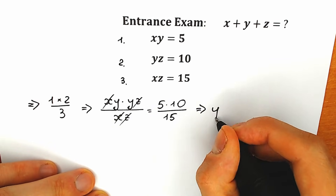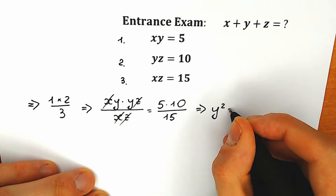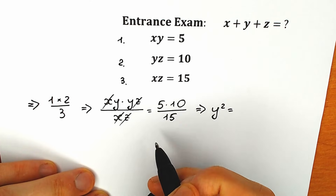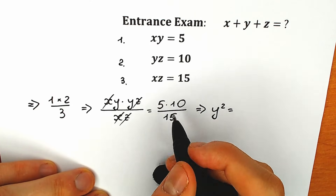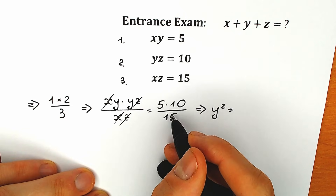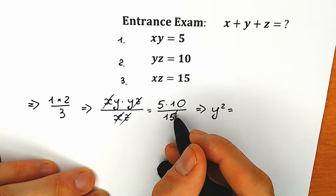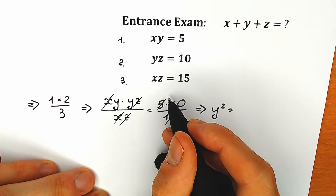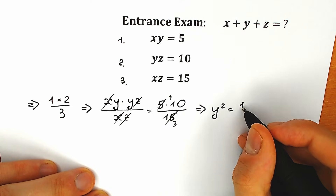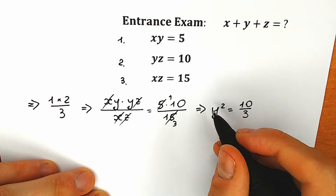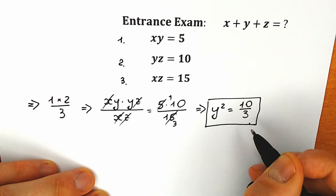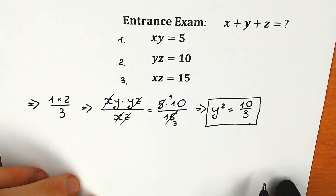So from here we have y squared equal to 5 times 10 over 15. We can cancel by 5, giving 10 over 3. So y squared equals 10/3. This is extremely useful information — let's underline this expression.